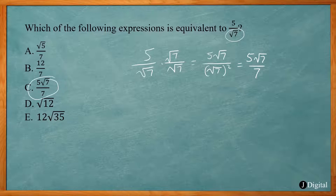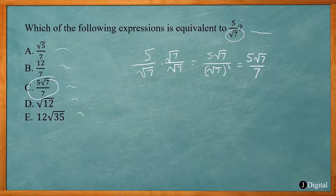Another way you can solve this problem is put it into your calculator: 5 divided by square root of 7, and you'll get some decimal number. If you do the same thing for all the answer choices, you want to see which one gives that same decimal answer. So that's another way to solve this type of problem.